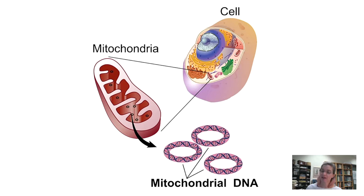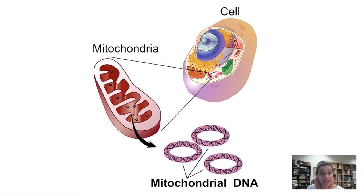Mitochondrial DNA is from a cool little bacteria that started working so synergistically with the cell that they merged together, and now we can't live without them. Mitochondria change chemical energy from food into the kind of energy — ATP — that our cells need. Cells that need a lot of energy have a lot of mitochondria; liver cells can have as many as 2,000 mitochondria each, while red blood cells have about zero.